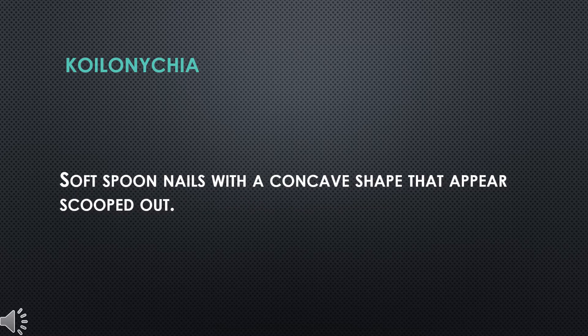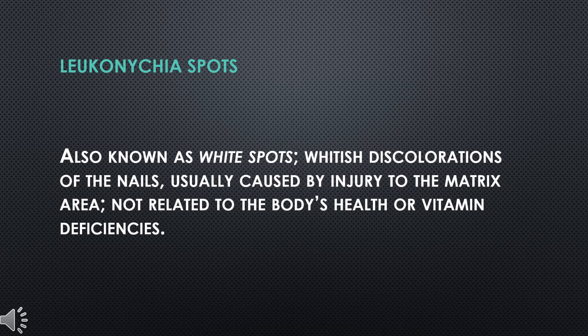Koilonychia: Soft spoon nails with a concave shape that appear scooped out. Leukonychia Spots: Also known as white spots, whitish discolorations of the nails, usually caused by injury to the matrix area, not related to the body's health or vitamin deficiencies.